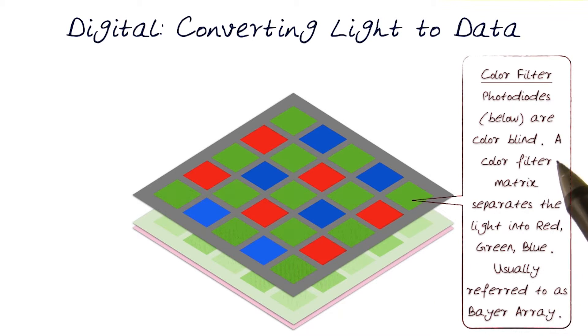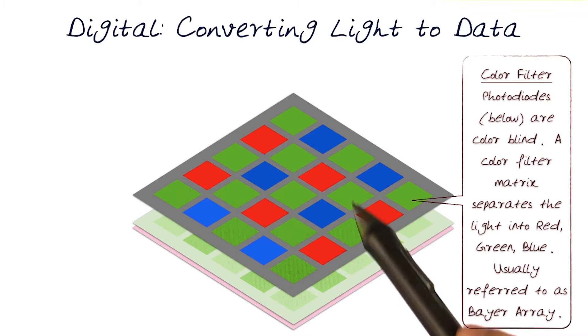Basically what it does, it takes a color and separates the light into red, green, and blue. And once it's converted into red, green, and blue, it hits the photodiodes that are below, which then measure the intensity of it.